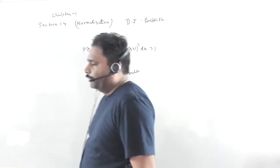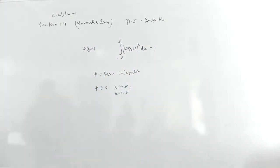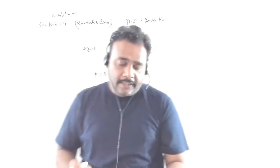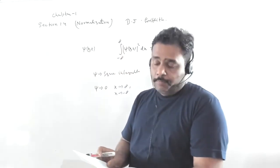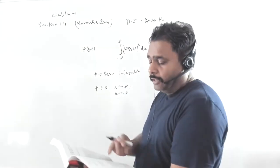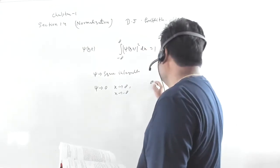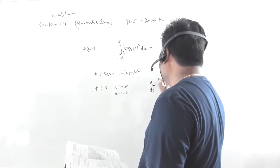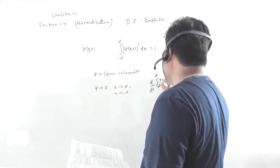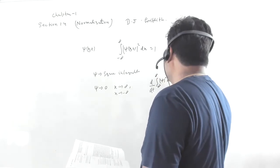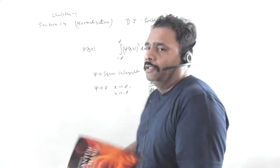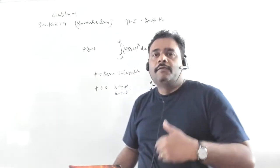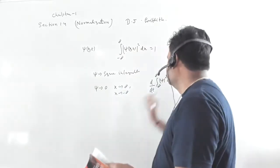The second part of this section discusses the total time derivative of the probability. It is given that the total time derivative d/dt of the integral from minus infinity to plus infinity of |Psi|^2 dx must be equal to 0. So the total time derivative of total probability will be 0.